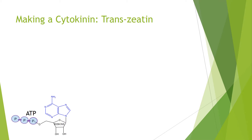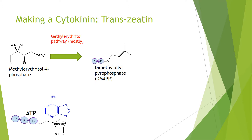Moving on to synthesising a cytokinin, I'm going to look at trans-zeatin specifically. We need first the adenine base from ATP or ADP — ATP is shown here for simplicity — and we also need an isoprene unit. There are two routes to get an isoprene unit in plants: the most commonly used methyl erythritol pathway, or the mevalonate pathway using acetyl-CoA as a building block.